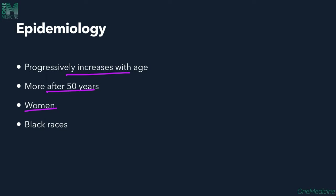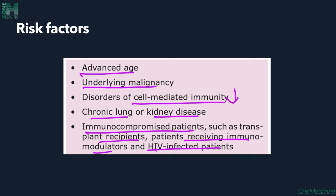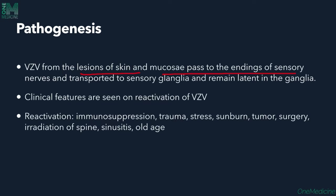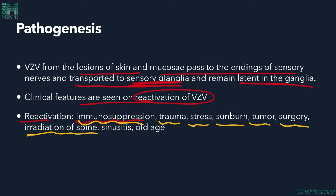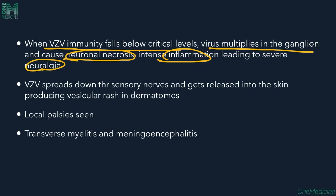Epidemiology: Herpes Zoster increases with age, more common after 50 years; women and Black races are more commonly affected. Risk factors include advancing age, malignancy, reduced cell-mediated immunity, chronic lung and kidney diseases, immunocompromised states such as transplant recipients, those on immunomodulators, and HIV-infected patients. The virus passes from skin lesions to the mucosa, then to sensory nerve endings, and is transported to sensory ganglia where it remains latent. Reactivation is triggered by immunosuppression, trauma, stress, sunburn, tumor, surgery, irradiation of spine, or sinusitis. When immunity falls below critical levels, virus multiplies in the ganglion causing neuronal necrosis and inflammation leading to severe neuralgia, spreads down the sensory nerve, and causes vesicular dermatomal rash.